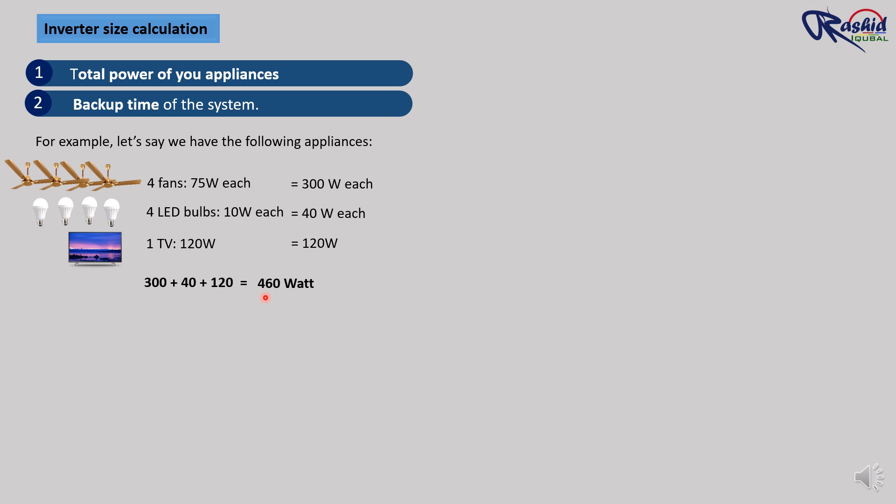Now we need to convert total wattage to VA because inverters are rated in VA. To do this, we need to consider the inverter power factor, which is usually between 0.6 and 0.8 for home inverters.